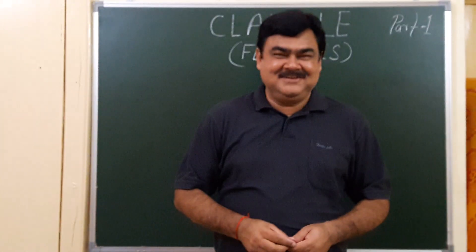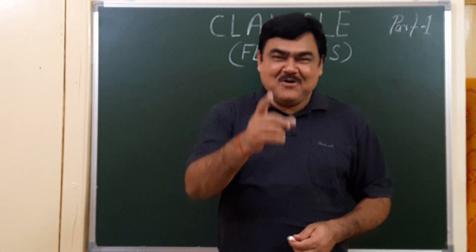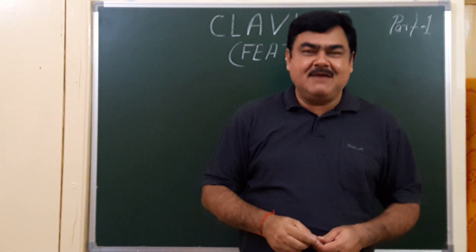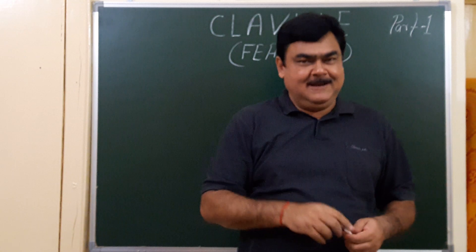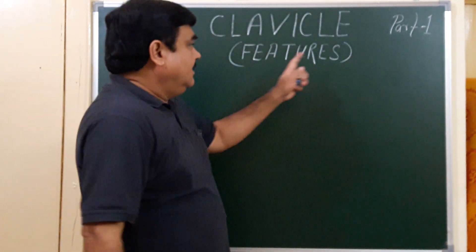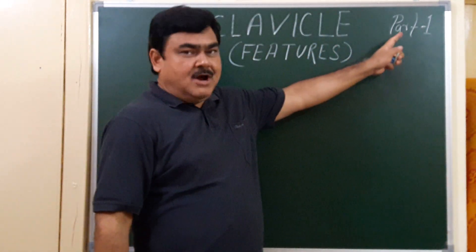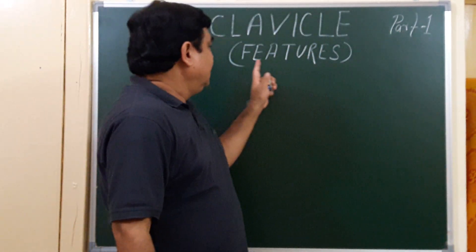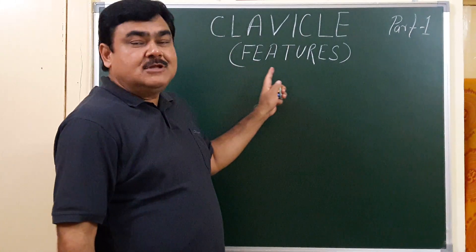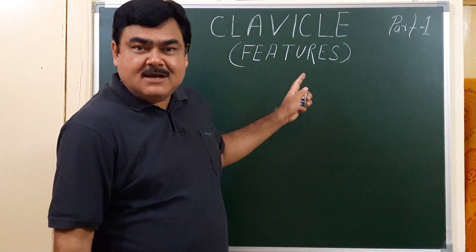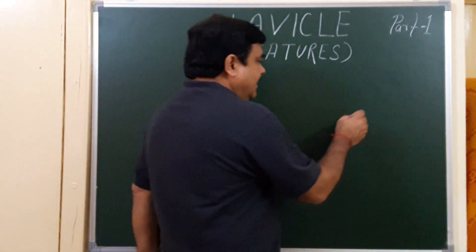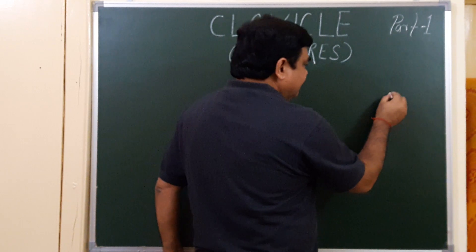Now we'll discuss the anatomy of the clavicle. This is part one, in which we'll discuss the features of the clavicle. First, we'll make a diagram.